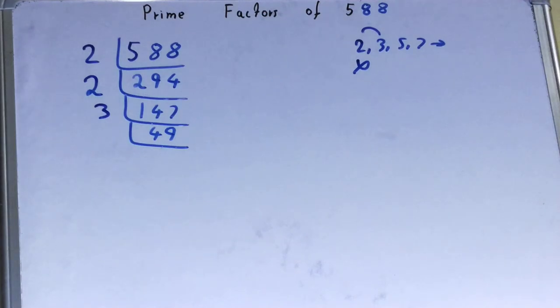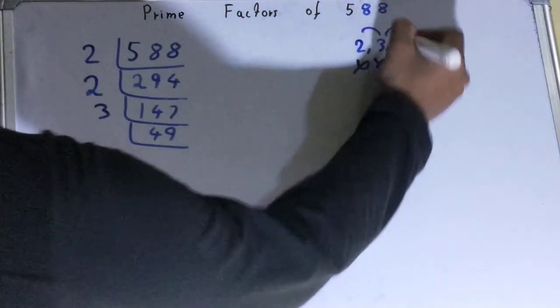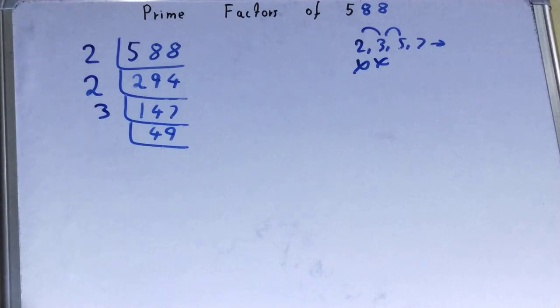Now 49 is further not divisible by 3. So we'll go to the next lowest prime number that is 5. The last digit is neither 5 nor 0, so it is not divisible by 5. Also we'll check it with 7.